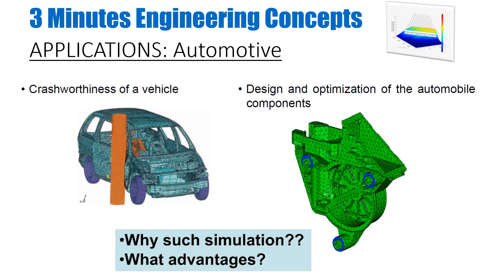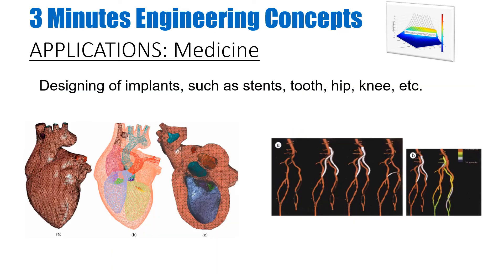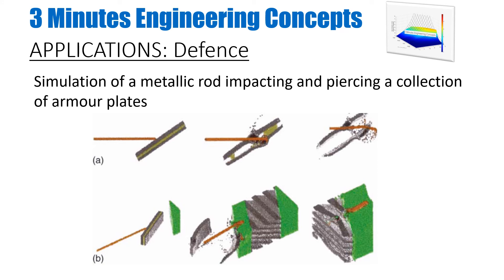This slide shows the application of computational mechanics in medicine. It's being used to design different types of implants like stents, tooth implants, hip implants, and knee implants. It's also used to simulate real biological structural responses — for example, the response of a heart as blood flows through it at different pressures and temperatures. On the right-hand side, you can see a virtual bypass operation being simulated to find the optimized way to treat blocked veins.